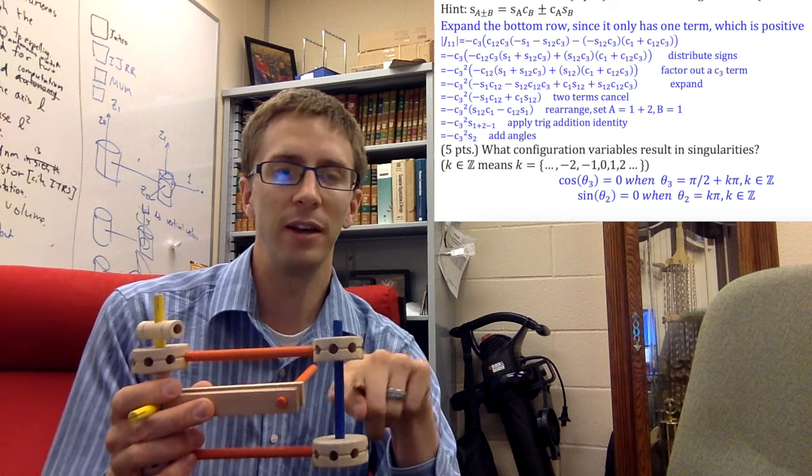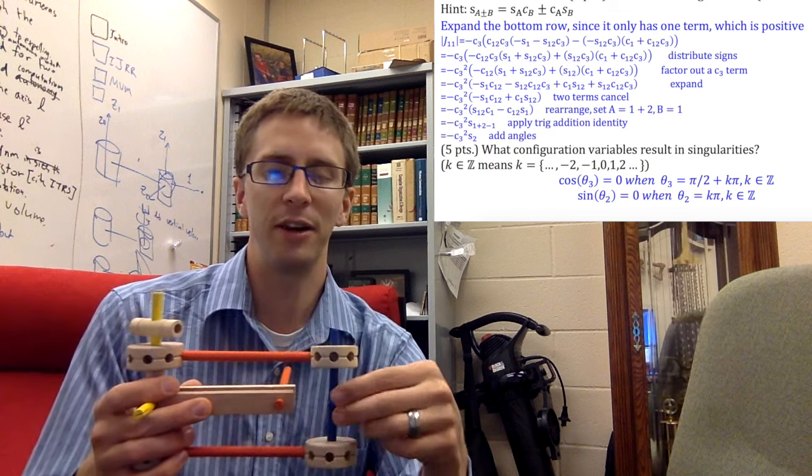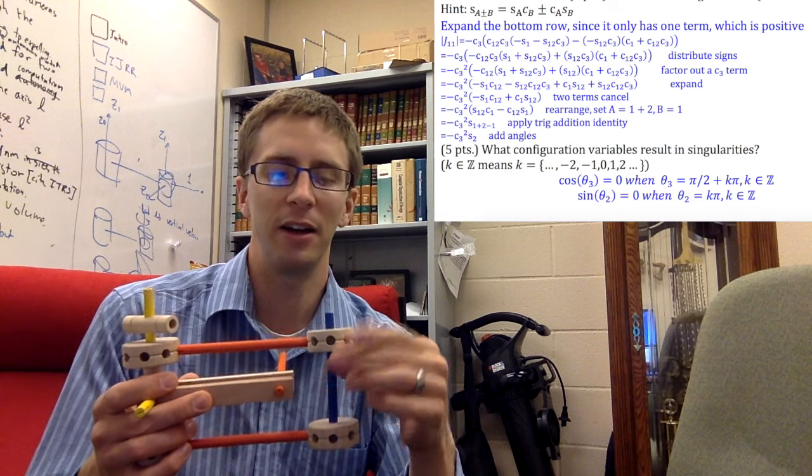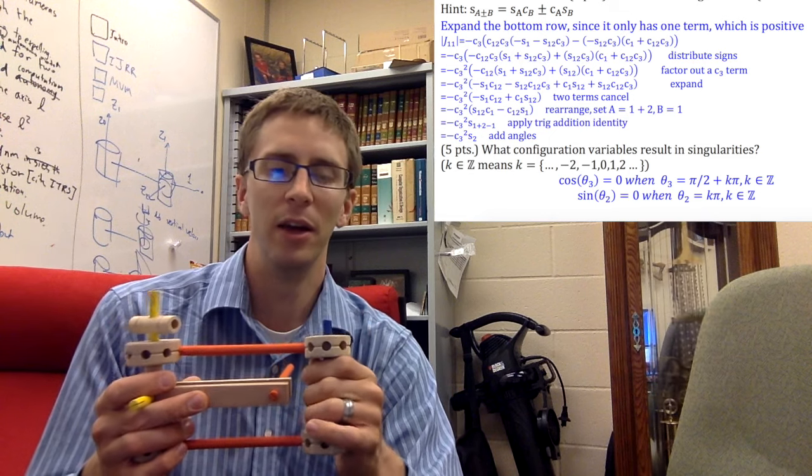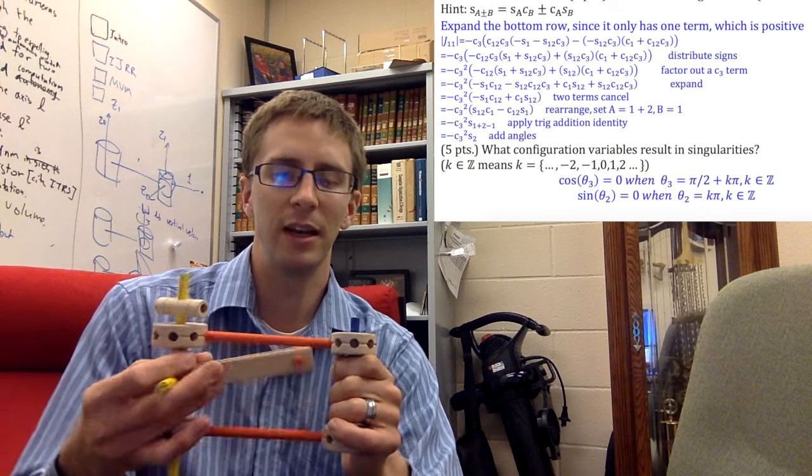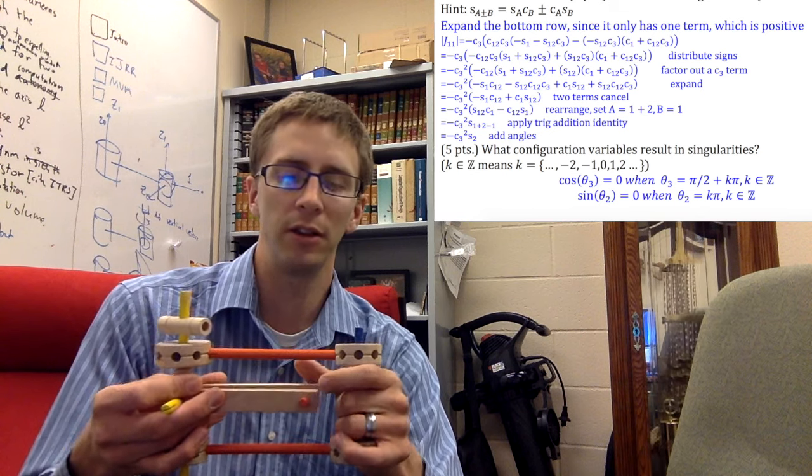If this is a one unit radial offset, then that means the end effector is right coincident with this first axis. And so the only way we can generate a velocity is up and down by rotating this. So we've lost all others.